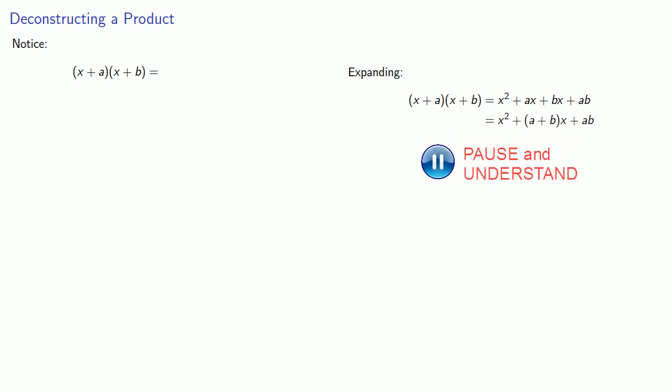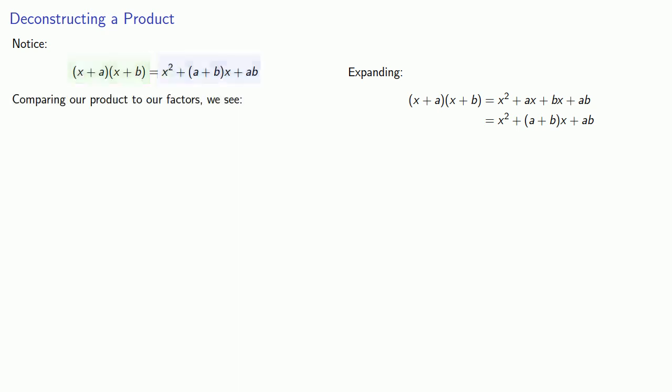Let's try to deconstruct this product. If I multiply x plus a times x plus b, I get x squared plus ax plus bx plus ab. I'll collect these like terms, ax plus bx, and rewrite them as a plus b times x. So the expanded form is x squared plus (a + b)x plus ab.